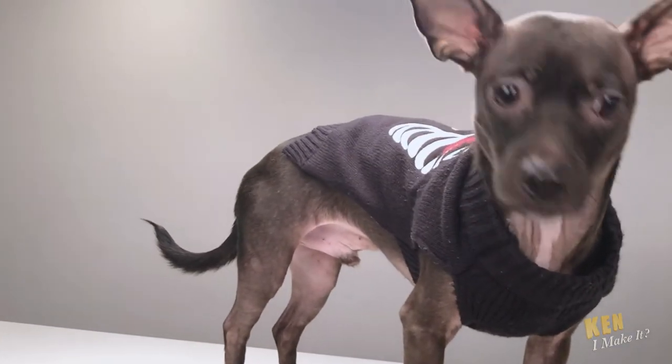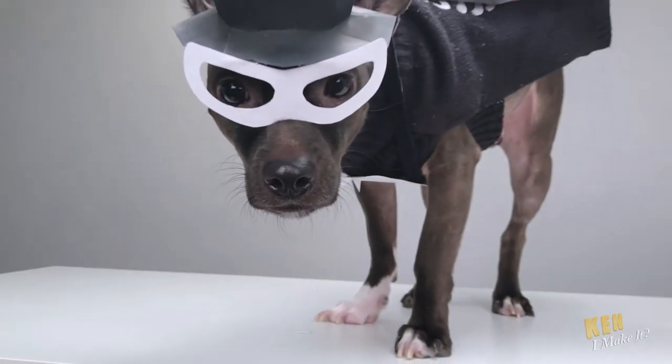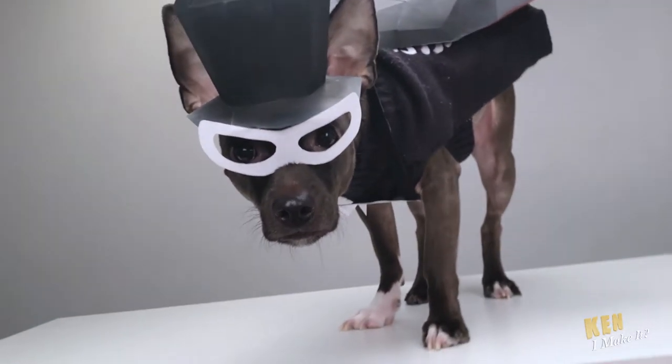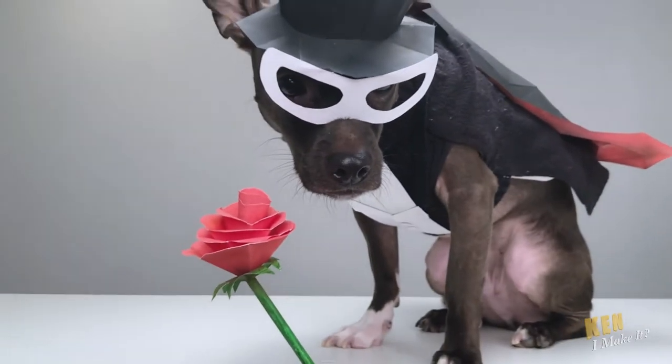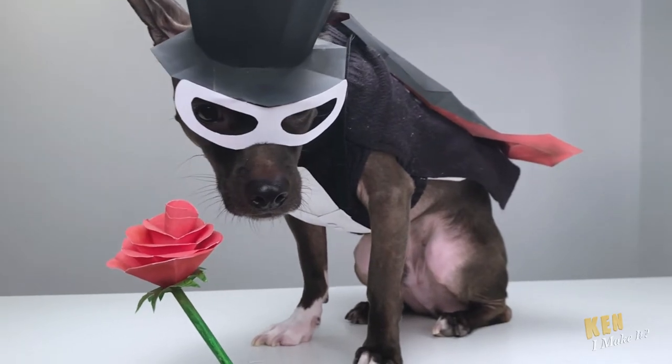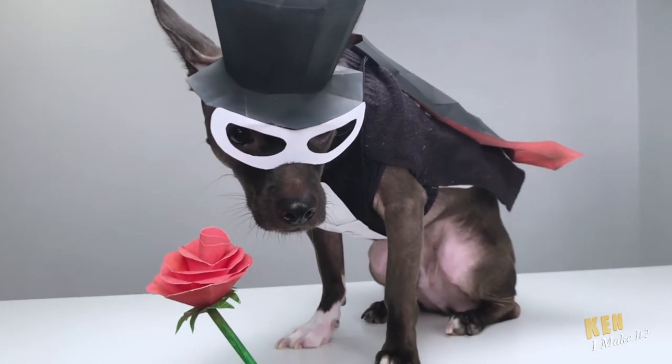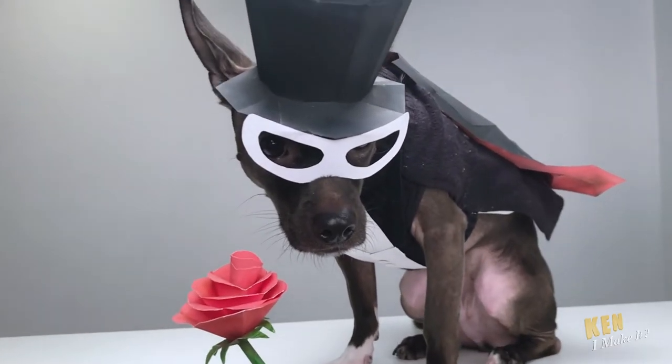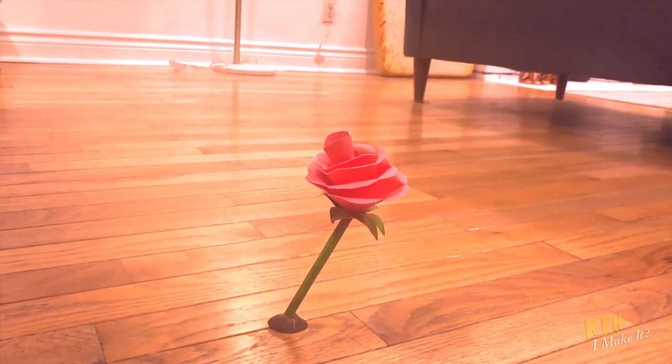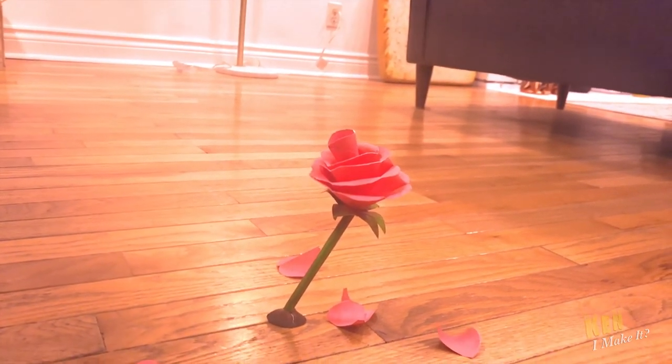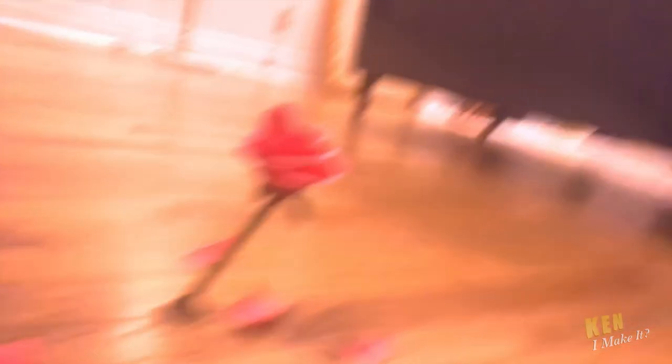Here he is, and now the reveal. He looks more like a bandit than Tuxedo Mask. I know what's missing. The most crucial piece of this look. Ta-da. There we go. Here's Tuxedo Mask. Okay, he's not hating it, but he's also not super comfortable here. Maybe he just needs to be sitting on his favorite spot. Gasp. Who is that? It's Tuxedo Mask.